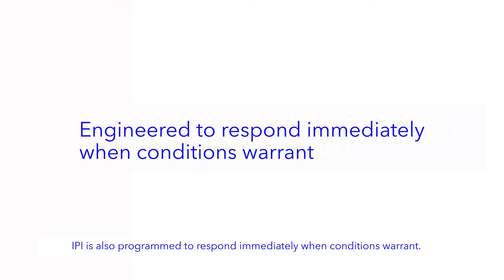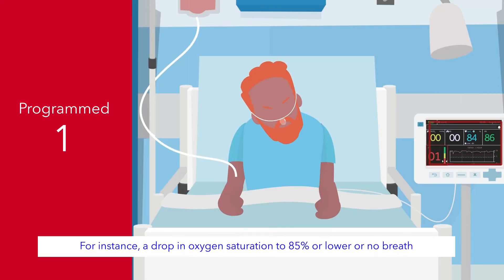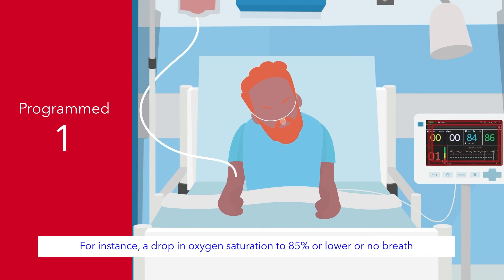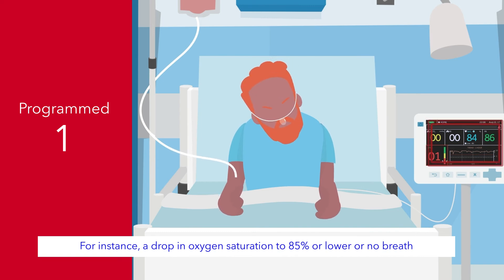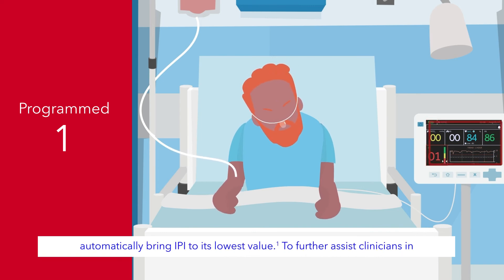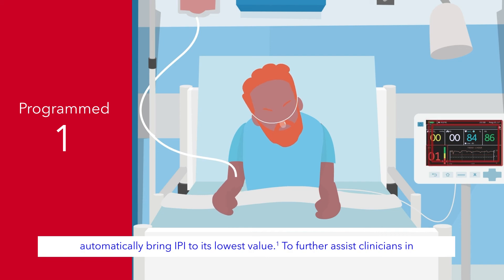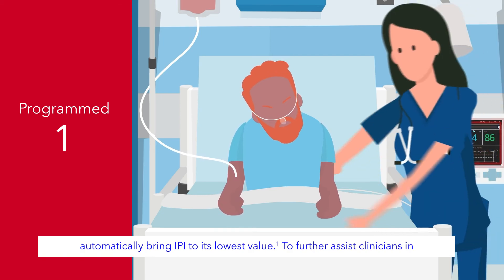IPI is also programmed to respond immediately when conditions warrant. For instance, a drop in oxygen saturation to 85% or lower, or no breath detected, automatically brings IPI to its lowest value, 1.